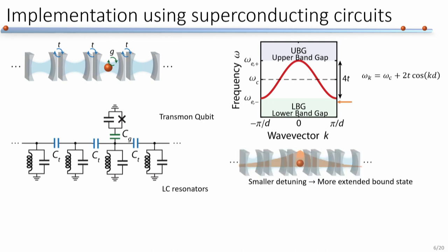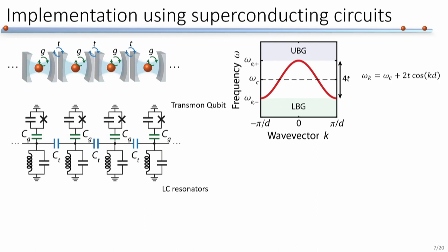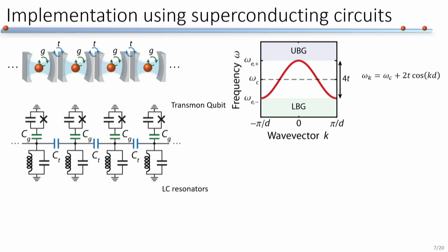When the qubit frequency is inside the band gap frequency, there is no propagating mode for the qubit to decay into. Instead, it hybridizes with the passband mode and forms a dressed state — what we call the qubit-photon bound state. The spatial extent of this bound state is determined by the qubit detuning relative to the band edge: smaller detuning gives a more extended bound state, and larger detuning gives a more restricted spatial extent. When we couple multiple qubits onto the same structure, the overlap between different qubit-photon bound states gives us photon-mediated interactions between different sites.